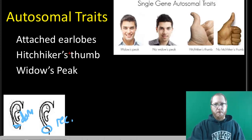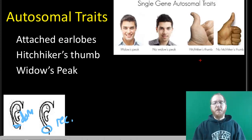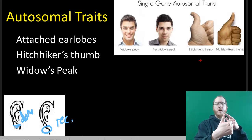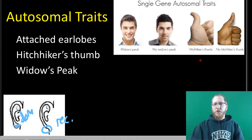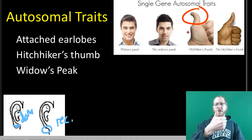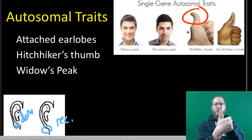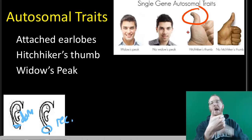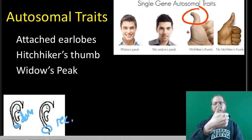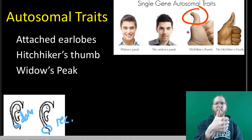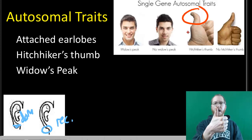The next trait is hitchhiker's thumb. Having hitchhiker's thumb is dominant — it's where your thumb goes up but then curls back, almost like you're pointing straight up but the tip bends backwards. Mine is a non-hitchhiker thumb, meaning I have two recessive alleles and neither is the dominant for this, so my thumb points more or less straight up.